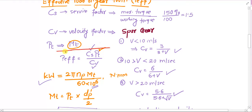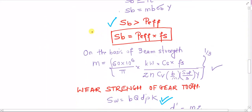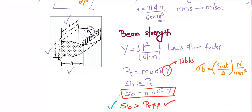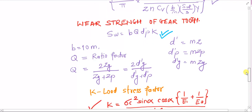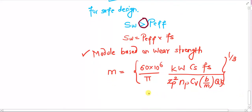Once you practice the numericals, you won't need to memorize everything. Once you have P_effective, check that beam strength evaluated as mb·σb·Y is sufficient, then compare with wear strength b·q·d'p·k. When both checks pass, you can confirm the design is safe. In the next lecture we will solve a numerical using this fundamental understanding. Thank you.